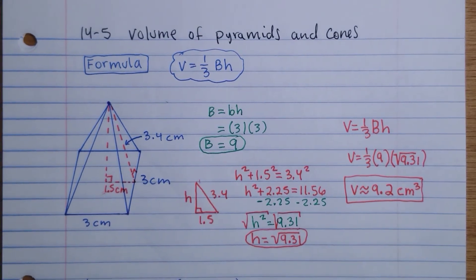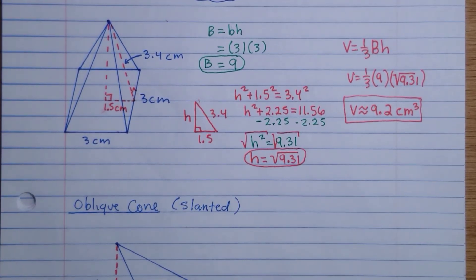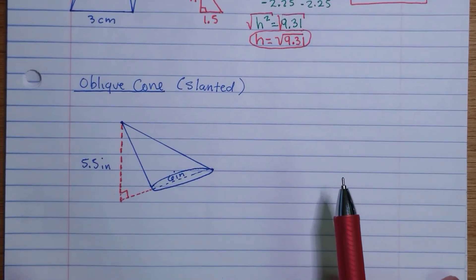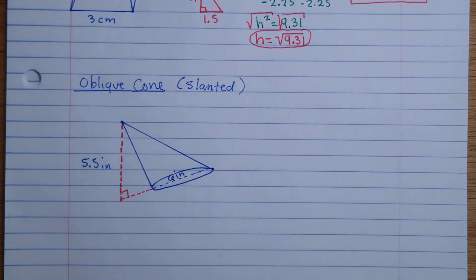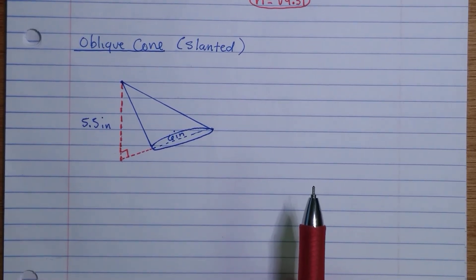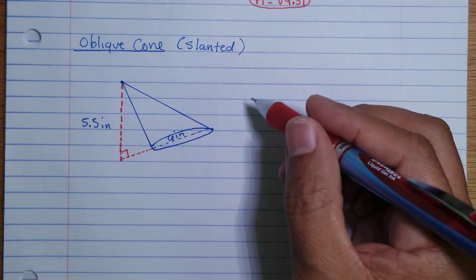On this problem, this is an oblique cone. Oblique just means that it's slanted. If you want to pause the video again and copy this problem, you should do that. This problem here is going to be a simple one.